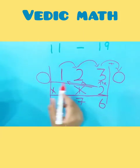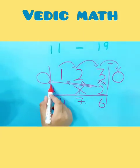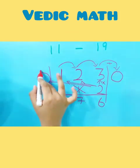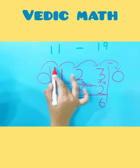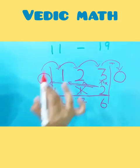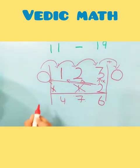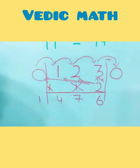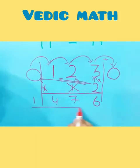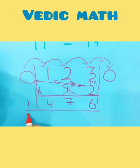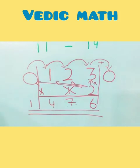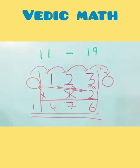Now many people forget the zero, but we also have to multiply 0. So 2 multiplied by 0 is 0, and 0 plus 1 equals 1. So the answer becomes 1476.